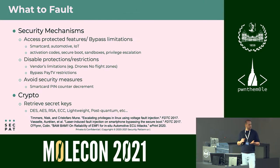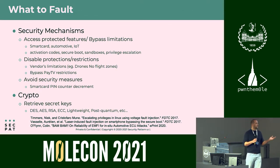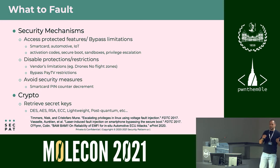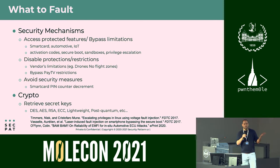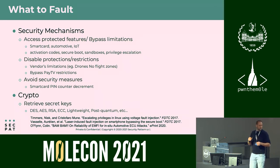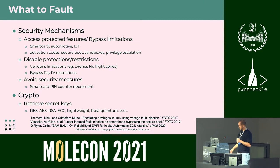Fault attacks can be used to access protected features or bypass limitations. Examples include smart cards, automotive, and Internet of Things. They can allow attackers to bypass activation codes, secure boot, sandboxes, or perform privilege escalation. They can also disable protections — for example, drones have no-fly zone limitations imposed by vendors, and fault attacks can make drones fly even in no-fly zones. It's also possible to bypass pay-TV restrictions, or avoid security measures like smart card PIN blocking, which normally blocks after about 10 incorrect tries.